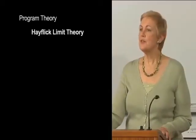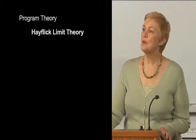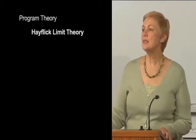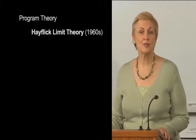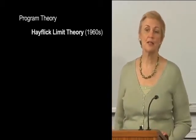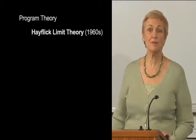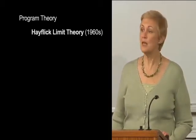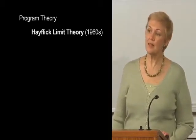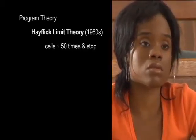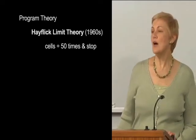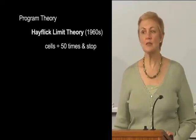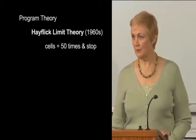Let's first look at a program theory: the Hayflick Limit Theory. This theory was proposed in the 1960s by two biologists who discovered that some cells divide about 50 times, then suddenly stop dividing. These were cells like lung, muscle, and heart cells, for example.